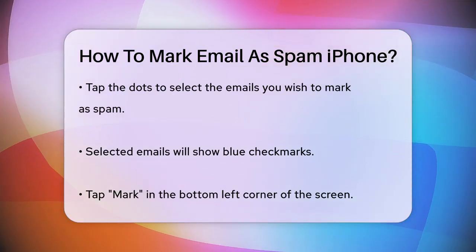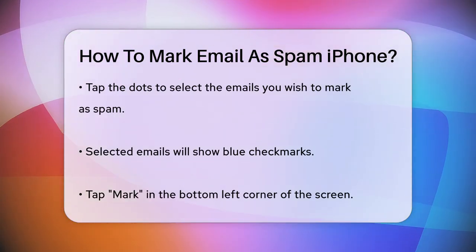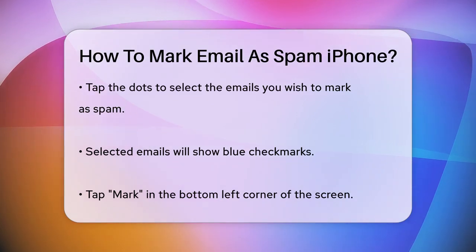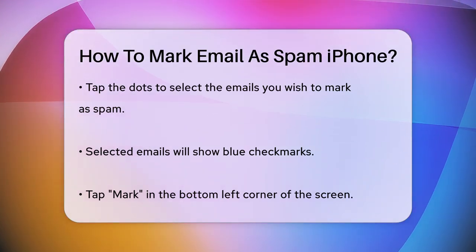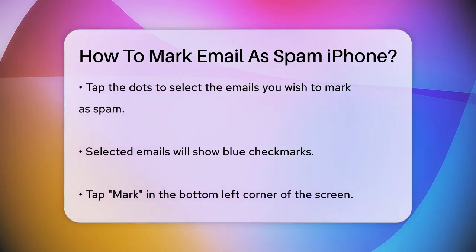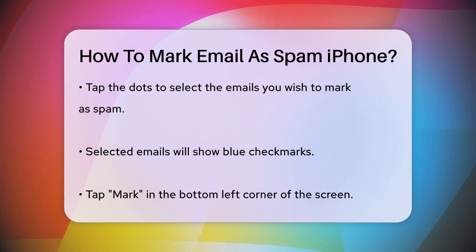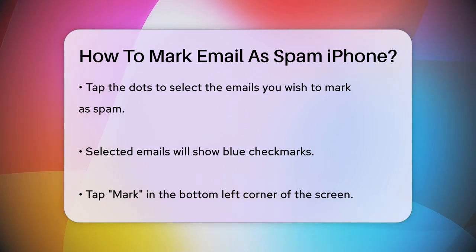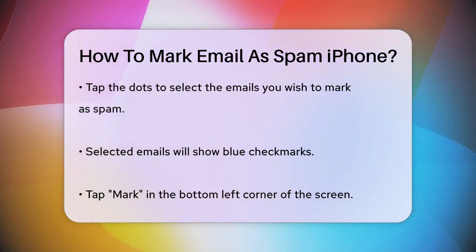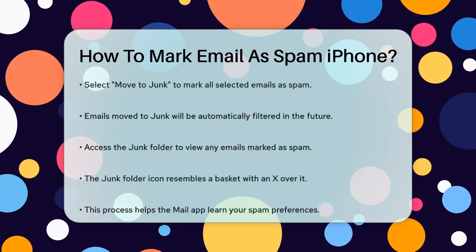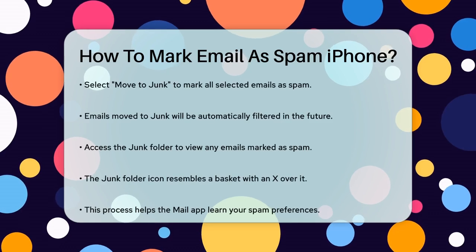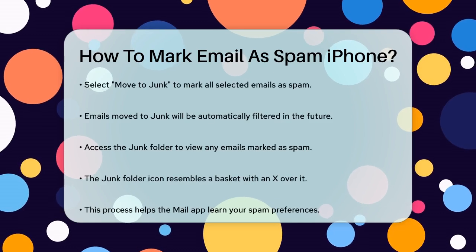Once you've moved an email to the Junk folder, the iPhone's Mail app will automatically filter any future emails from that sender into the Junk folder. You can still view these emails by opening the Junk folder, which has an icon that looks like a basket with an X over it.